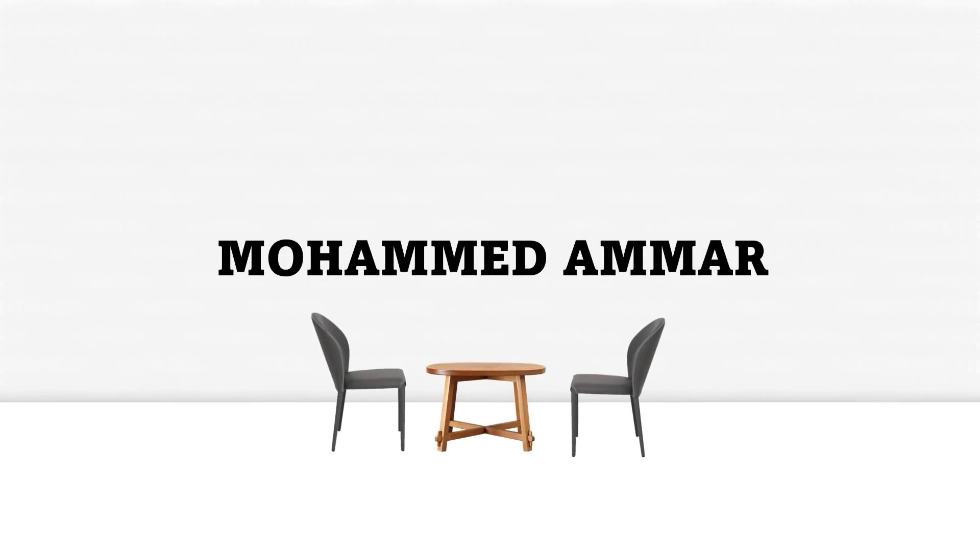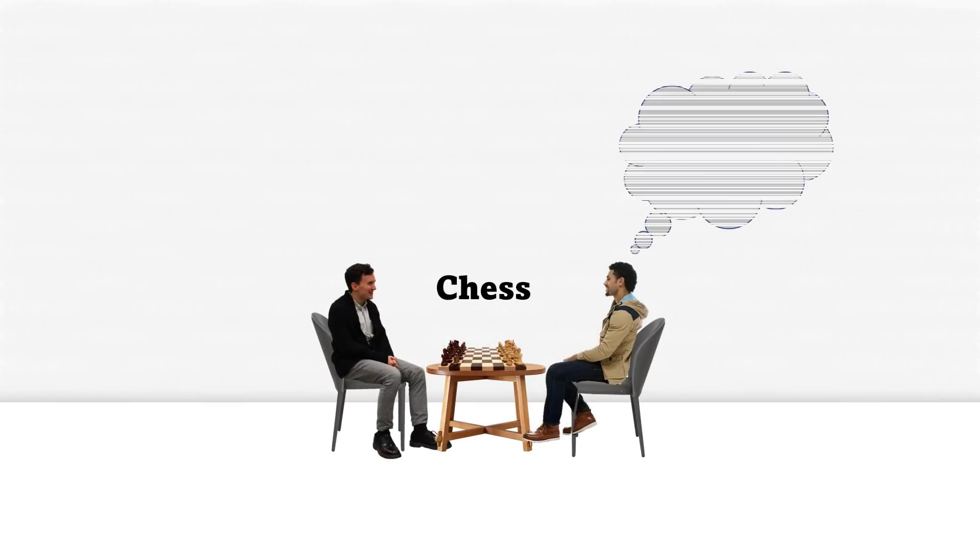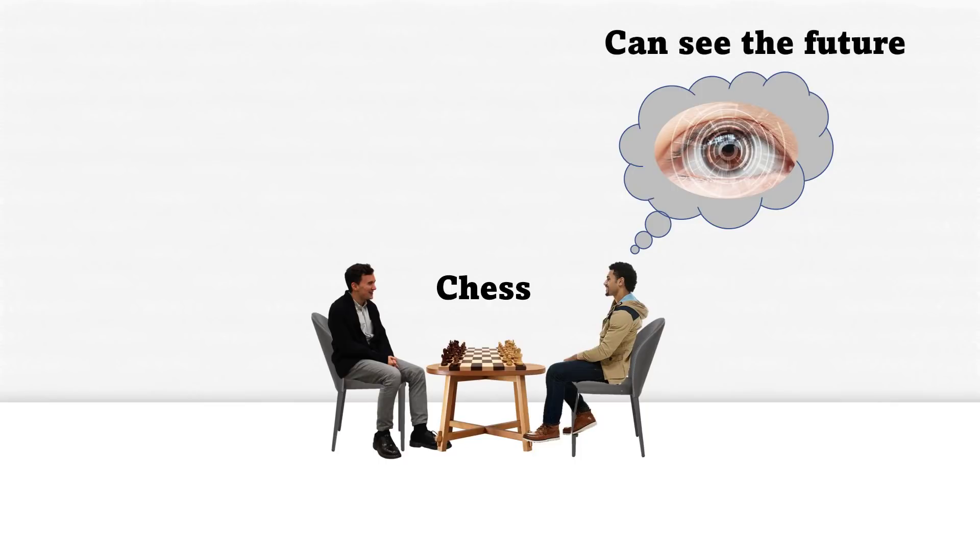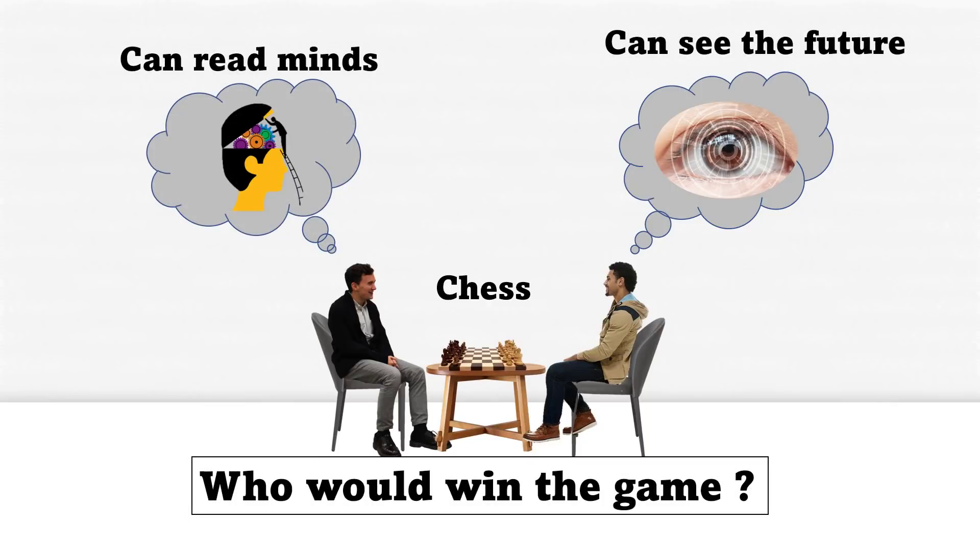What's up logical people, this is Ammar. A game of chess is played between two supernatural players. One of them can see the future and the other can read minds. The problem is, who would win the game?